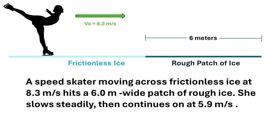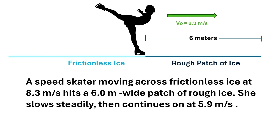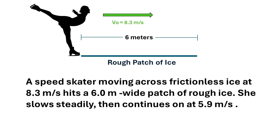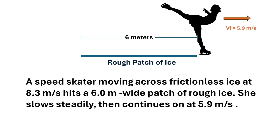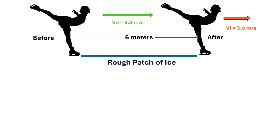The green arrow represents the speed she had before. As we can see, when she gets to the edge of the rough patch, her velocity is also 8.3 meters per second to the right — that's the green arrow. Now, focusing on just the rough patch of ice: as soon as she crosses it, her speed is diminished to 5.9 meters per second, as shown in this picture with the velocities before and after the 6 meters of rough patch of ice.